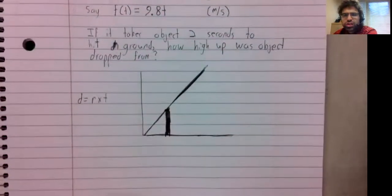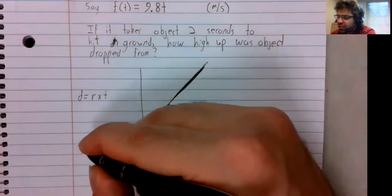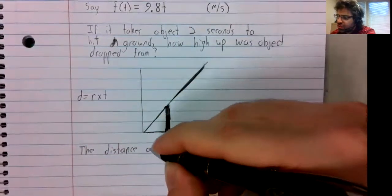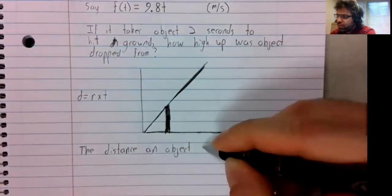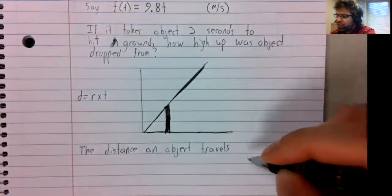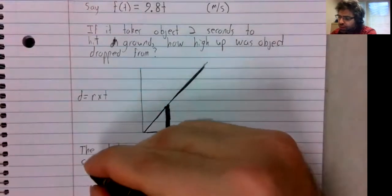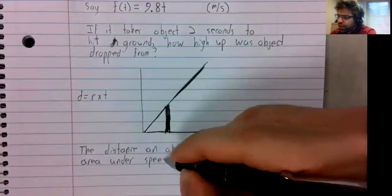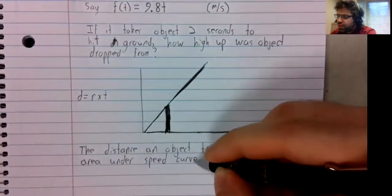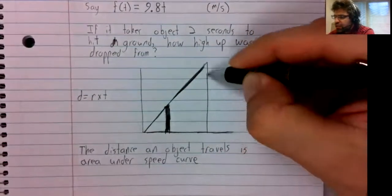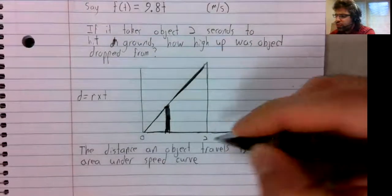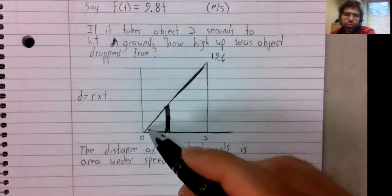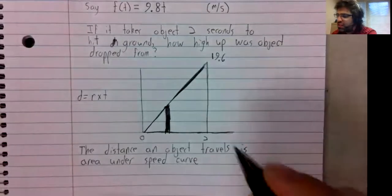That suggests the following true statement: that the distance an object travels is the area under the speed curve. The area under this curve from zero to two, we can find this is a triangle. The area is one half the base times the height.